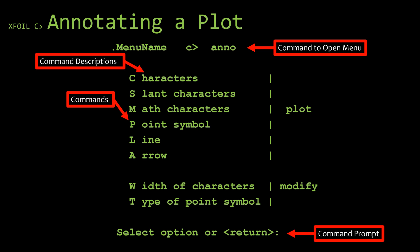To access the annotation menu, just type Anno in the command prompt. That's A-N-N-O, and hit Enter. When you do that, you will see that it will pop up with this mini menu, showing you the different commands, the command descriptions, and of course, giving you a prompt where you can select what annotation you want to put onto your plot.